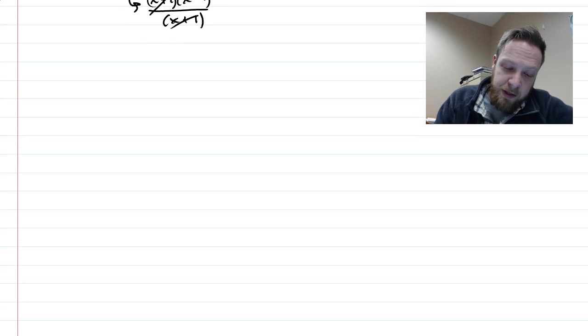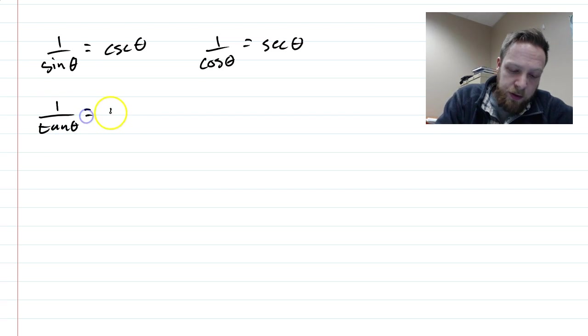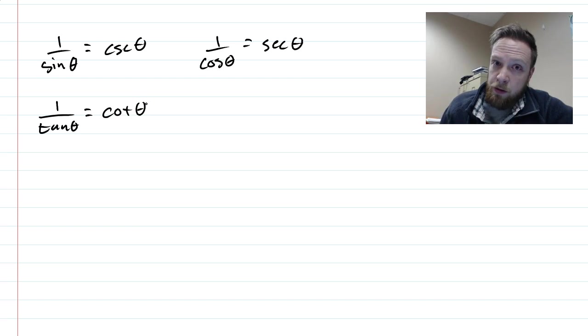The basic identities that we have are: 1 over sin θ is csc θ. The one that's paired with cosine is 1 over cos θ equals sec θ. And then 1 over tan θ equals cot θ. But we knew this already. This is the Soh-Cah-Toa or just the reciprocal pairs.